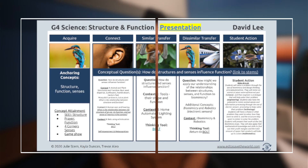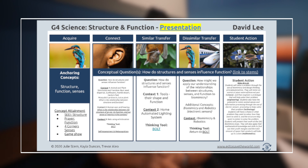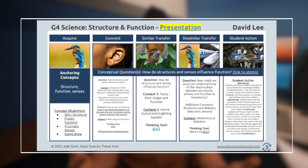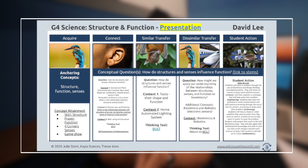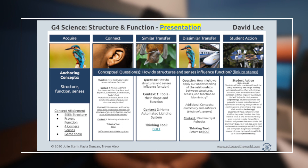Throughout the storyboard you can see a gradual increase in the complexity of the learning as well as the context. In the Acquire phase, it is more surface-level learning where concepts are learned individually. Then we have deep learning, where students organize ideas into concepts and find connections and relationships between them. Finally, we have transfer learning, where you apply what you've learned to a new, meaningful, and relevant situation.